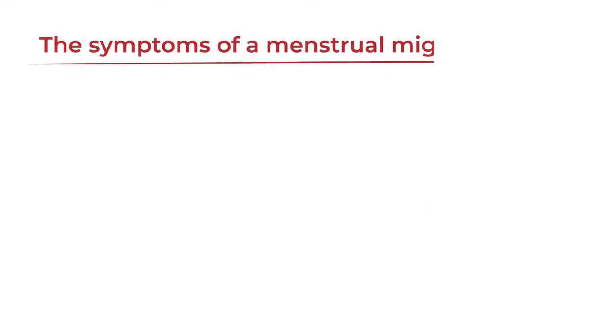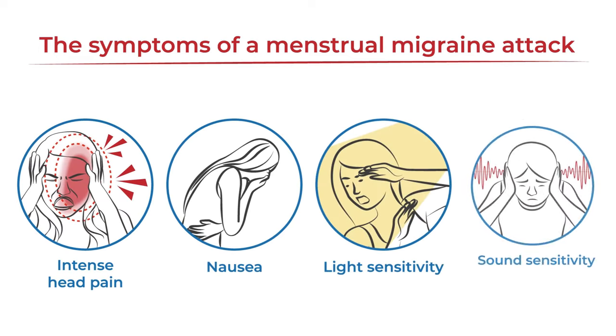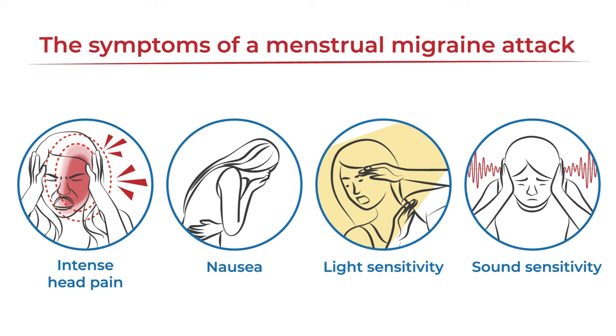The symptoms of a menstrual migraine attack may include intense head pain, nausea, sensitivity to light and or sound, and more.